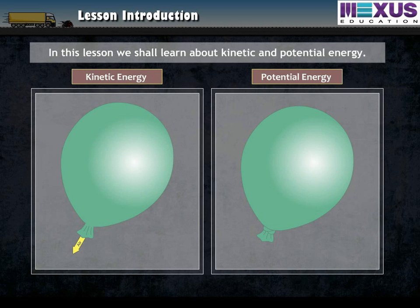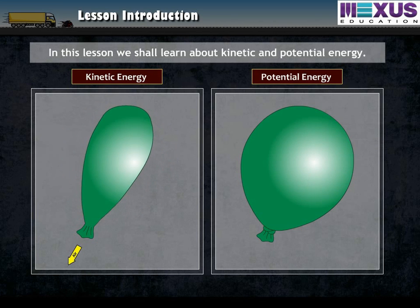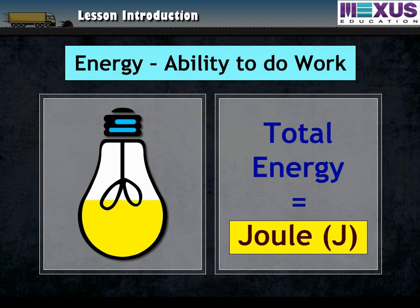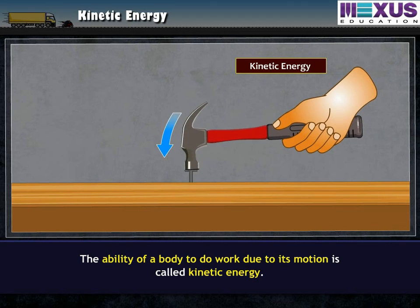In this lesson, we shall learn about kinetic and potential energy. Energy is the ability to do work. Its unit is joule. The ability of a body to do work due to its motion is called kinetic energy.